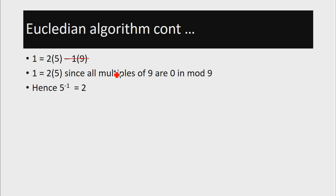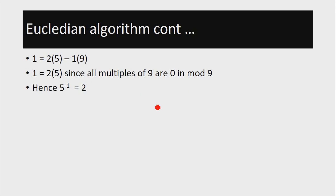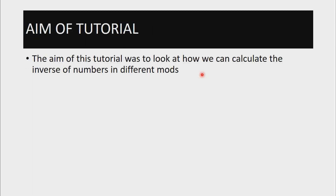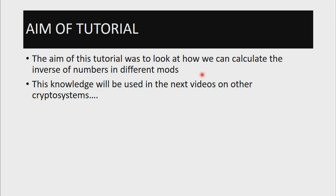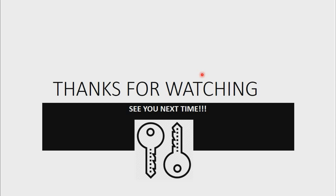We can also conclude that the inverse of 2 is equal to 5, since 2 times 5 gives us 1. This is how we can find the greatest common divisor and the inverse of elements using the Euclidean algorithm. We'll use this knowledge in later videos on cryptography, where we apply the concept of finding inverses in other cryptosystems. So if you're interested, check out those next videos. Like if you enjoyed this video, subscribe if you'd like to watch more cryptography videos, and I'll see you next time. Bye.